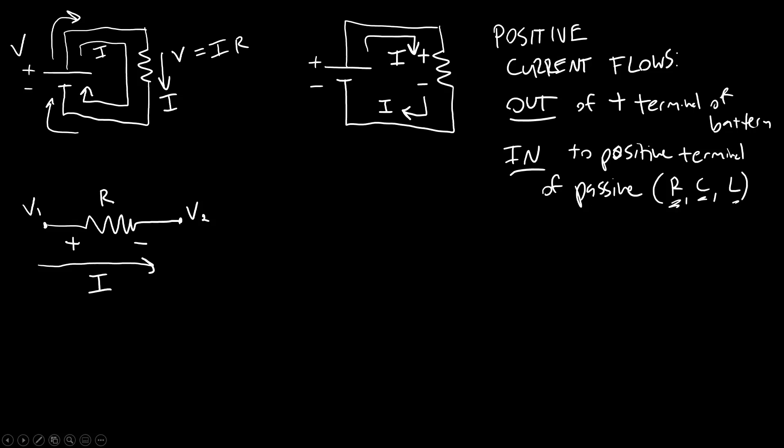And the resistor has resistance r, so I know in this case Ohm's law v equals ir. This voltage drop across the resistor is this quantity v1 minus v2. v1 minus v2 equals ir.